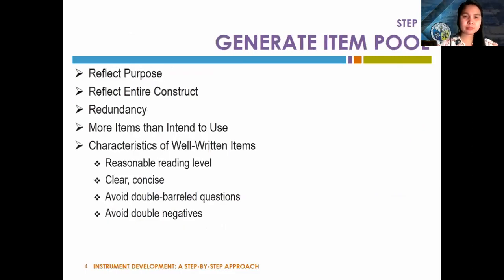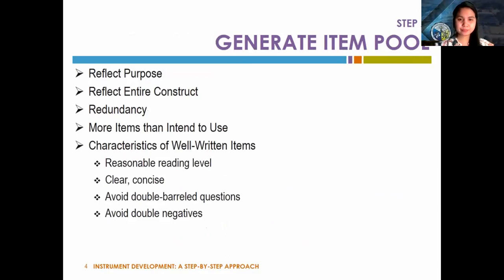The second step is writing the actual items that might be included on an instrument. It's important to write items reflecting the entire construct and different levels of each aspect, and to write more items than you'd like to end up with. Some basic rules: write items that don't require too advanced a reading level, make sure items are clear and concise, avoid asking two questions in one, and avoid double negatives.